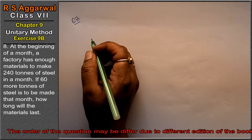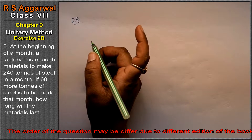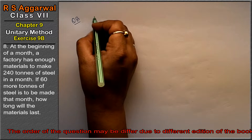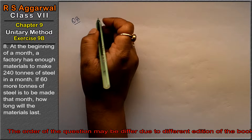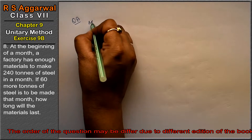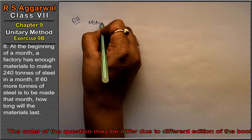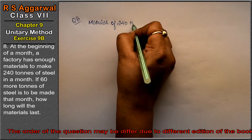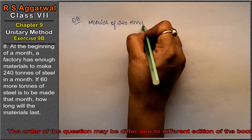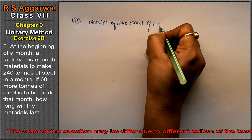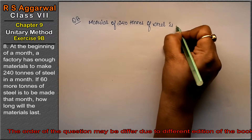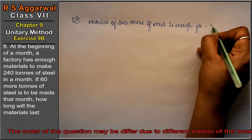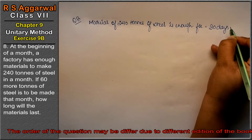We know that material for 240 tons is required for one month. One month has 30 days, right friends. So material of 240 tons of steel is enough for one month, that is 30 days.